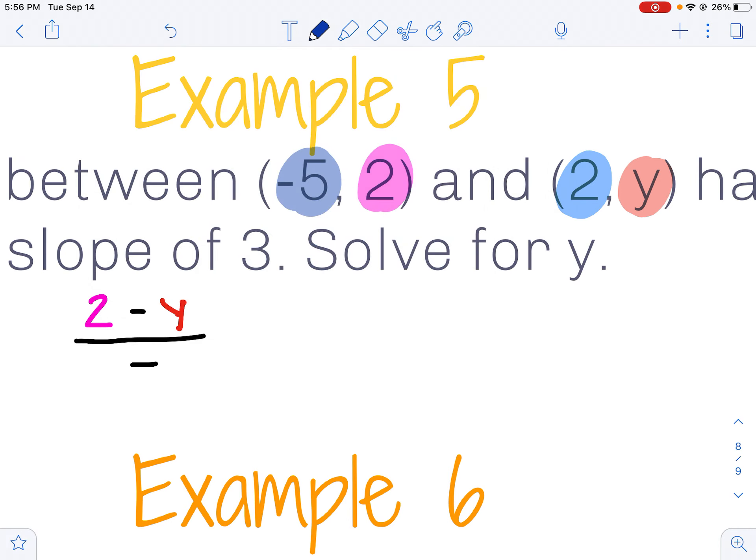And then I'm going to subtract those and I'll divide them by my first x value, negative 5, minus my second x value, 2, and I'm going to set that equal to 3.